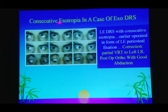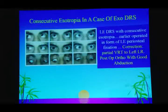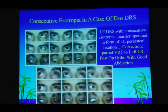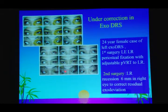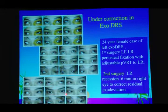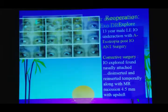Another case: consecutive esotropia in exo-DRS. Initially we had done only periosteal fixation and found it turned into a slight eso, so we performed a partial VRT, which improved abduction and corrected the primary position esotropia. In another exo-DRS case that remained exo after periosteal fixation and PVRT, once abduction was confirmed free, we operated on the other eye — lateral rectus recession of 6mm — which improved the movement. Some cases may require additional surgery in this manner.